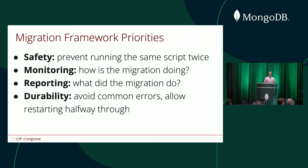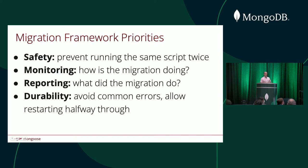Let's take a quick look at the overarching priorities the migration framework is designed to achieve. First, safety and not running the same migration twice. We assume you're committing your migrations to a GitHub repo, so we track migrations by their filename and make sure you don't rerun migrations you've already run. Also, rerunning a migration is either wasteful or creates opportunities for data inconsistencies. Monitoring is another priority — being able to see how your migration is doing, how far along it is, how many documents it's updated, and how many are still left.